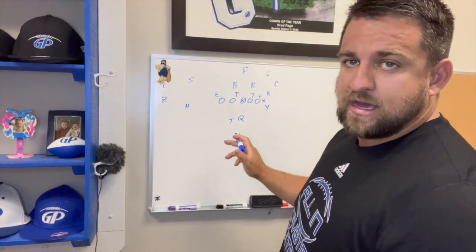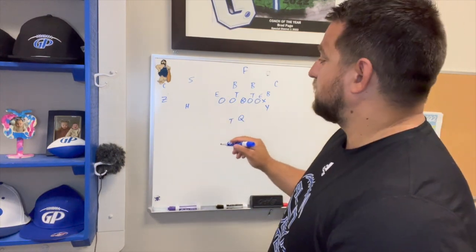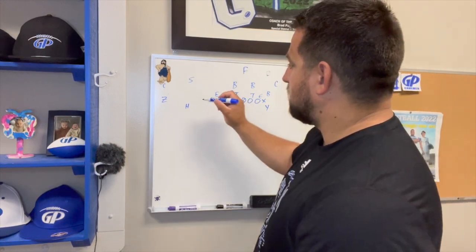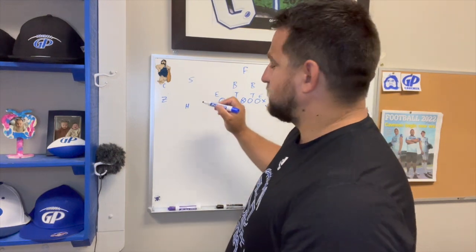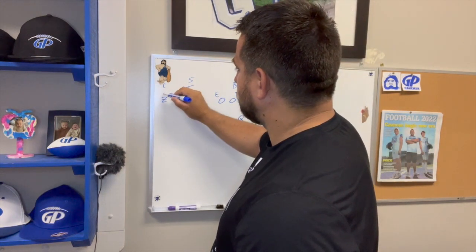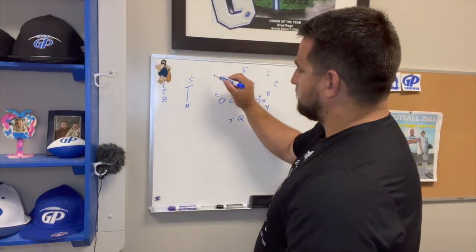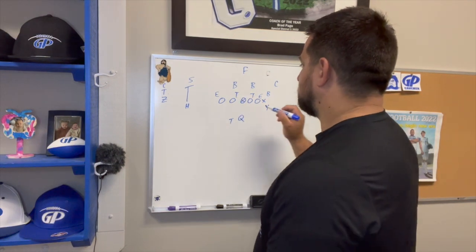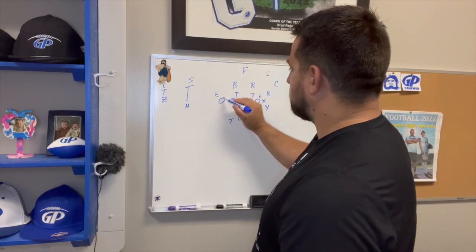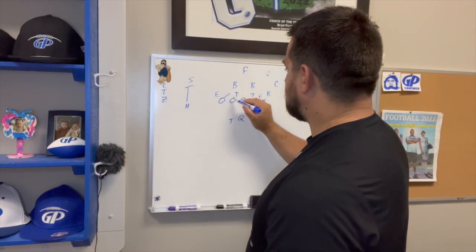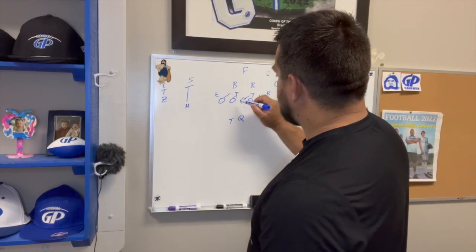Our receivers always have a job — first threat, second threat, they're blocking. We're running away from our tight end strength. If we get a look like this, we're going to be gap down, gap down, gap down on the front side. Depending on what happens — if we get a three-technique instead of a one here — they're going to combo and work to the backside backer.